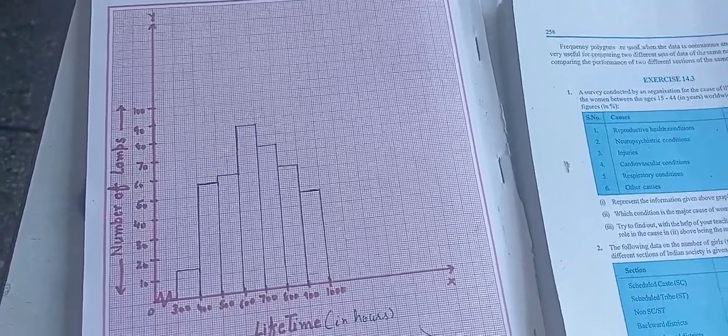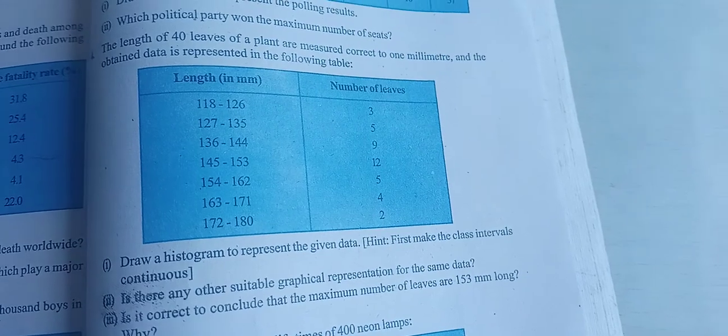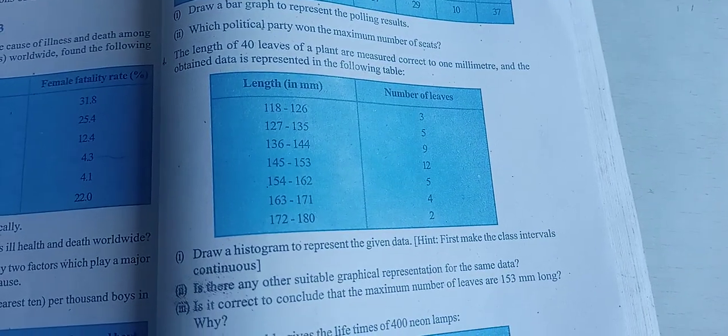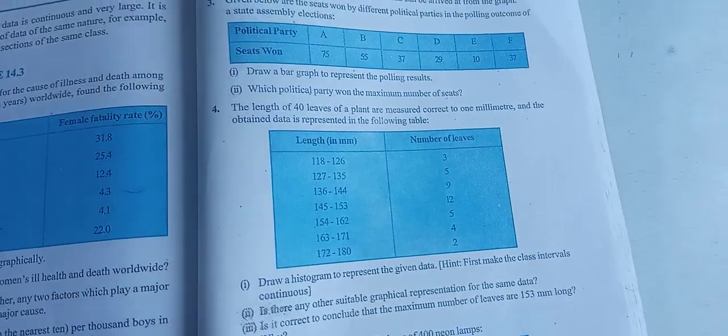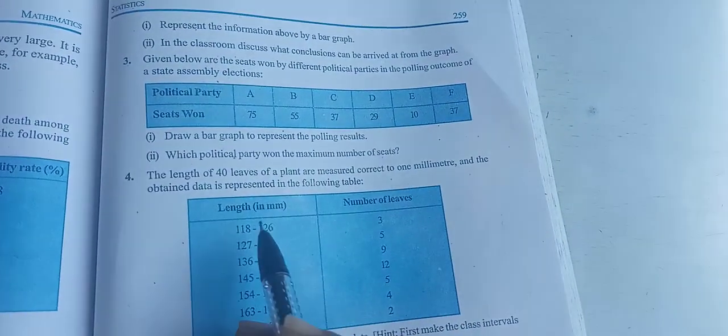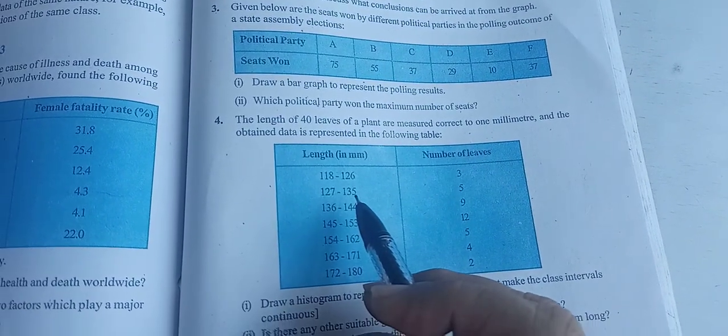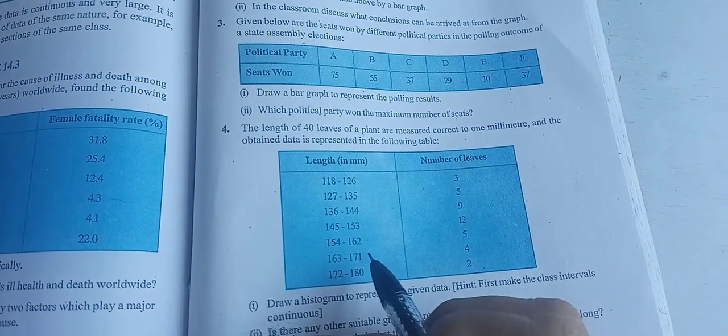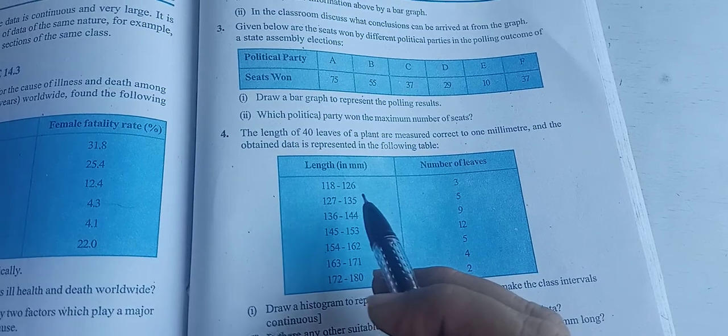Now come to question number 4. It is given to you the length of 40 leaves of a plant are measured correct in the millimeter. Now just check this table: 118 to 126, 127 to 135. This is not a continuous class interval. So what you will do? First of all you will make this class interval continuous.